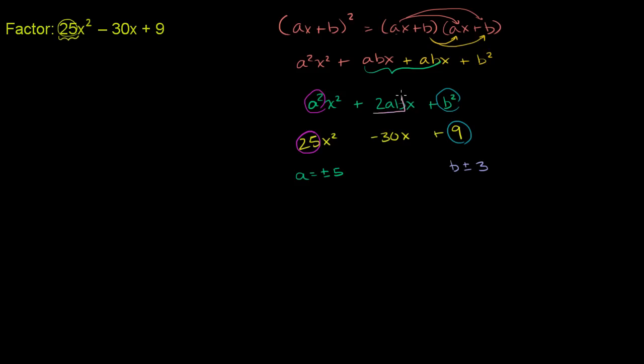2ab, this part right over here, 2ab needs to be equal to negative 30. Or another way, let me write it over here. 2ab needs to be equal to negative 30. Or if we divide both sides by 2, ab needs to be equal to negative 15.